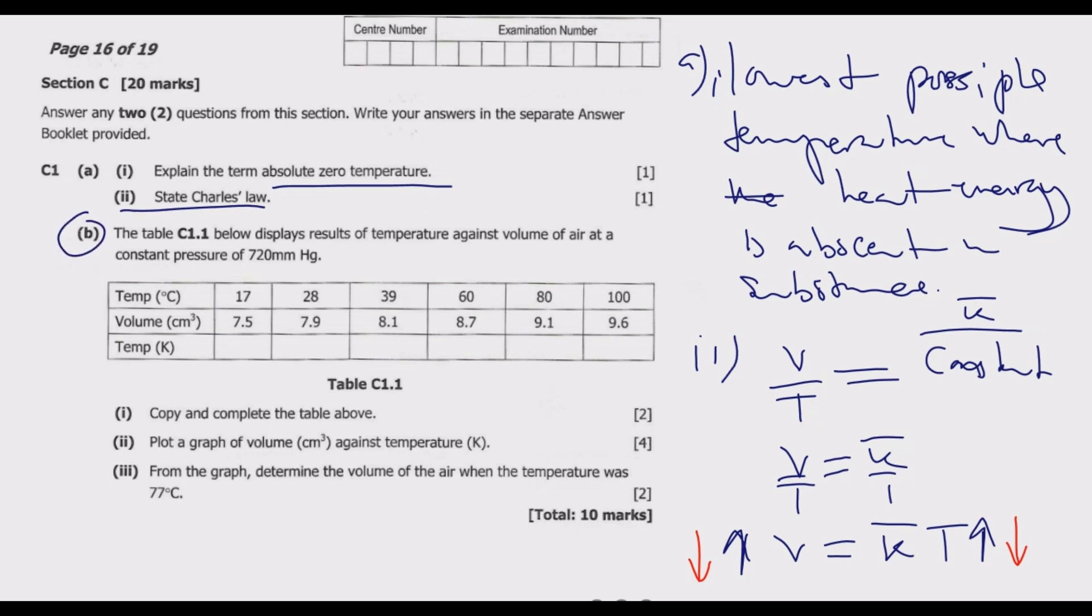We move to B. The table C1.1 below displays results of temperature against volume of air at a constant pressure of 720 millimeter mercury. Copy and complete the table above. To complete the table, we need to use this relationship that temperature in Kelvins is given by temperature in degree Celsius plus 273.